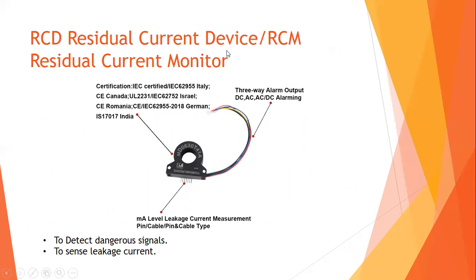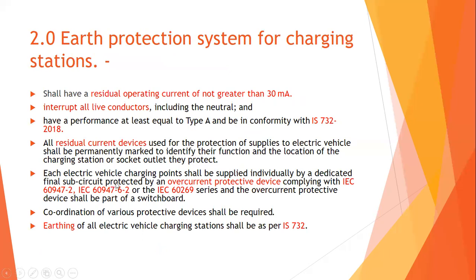A residual current device (RCD) or residual current monitor (RCM) detects leakage current and sends signals to a monitor so precautionary measures can be taken. RCDs are used majorly for safety. Each electric vehicle charging station shall be supplied individually by a dedicated final subcircuit protected by an overcurrent protection device complying with IEC 60947-2, IEC 60947-6-2, or the IEC 60269 series, and the overcurrent protection device shall be part of the switchboard.